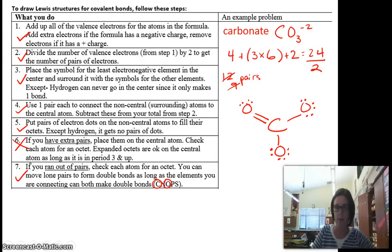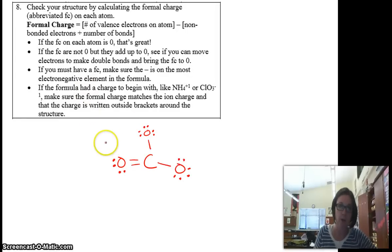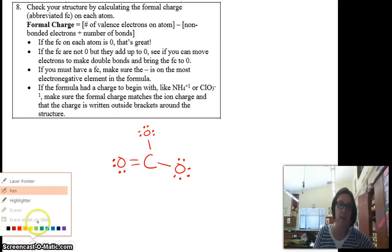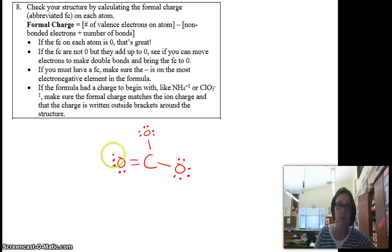Now we move on to step 8 where we're going to check for formal charge. So formal charge is the number of valence electrons minus the total of non-bonded electrons plus the number of bonds. So for this, I think I'm going to have to number them because I have some oxygens that are different from each other. So we'll call this oxygen type A. These are both going to be type B, right? Because this one's got a double bond and these do not.